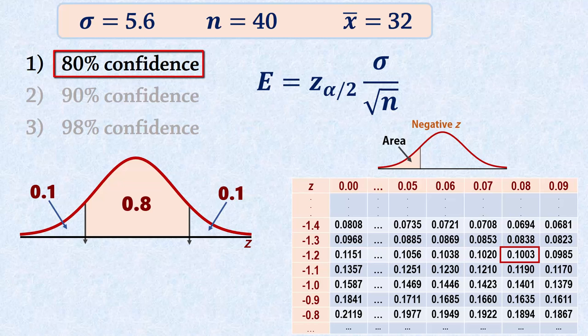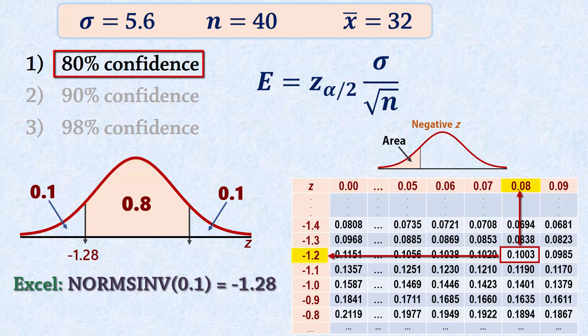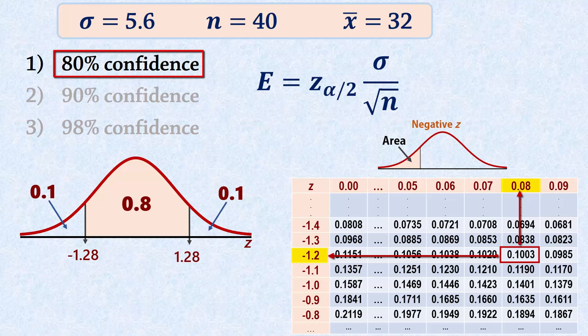And that corresponds to a Z score of negative 1.28 in the lower tail. And because of symmetry, it is 1.28 for the upper tail. So the Z critical value for the 80% confidence level is 1.28.